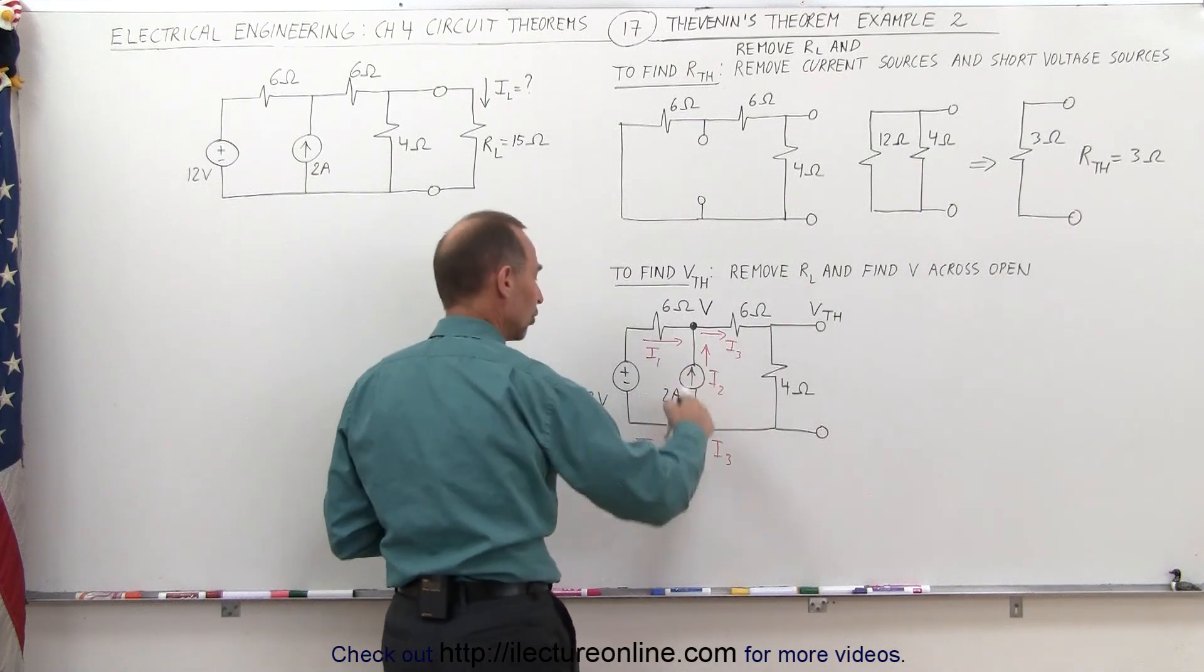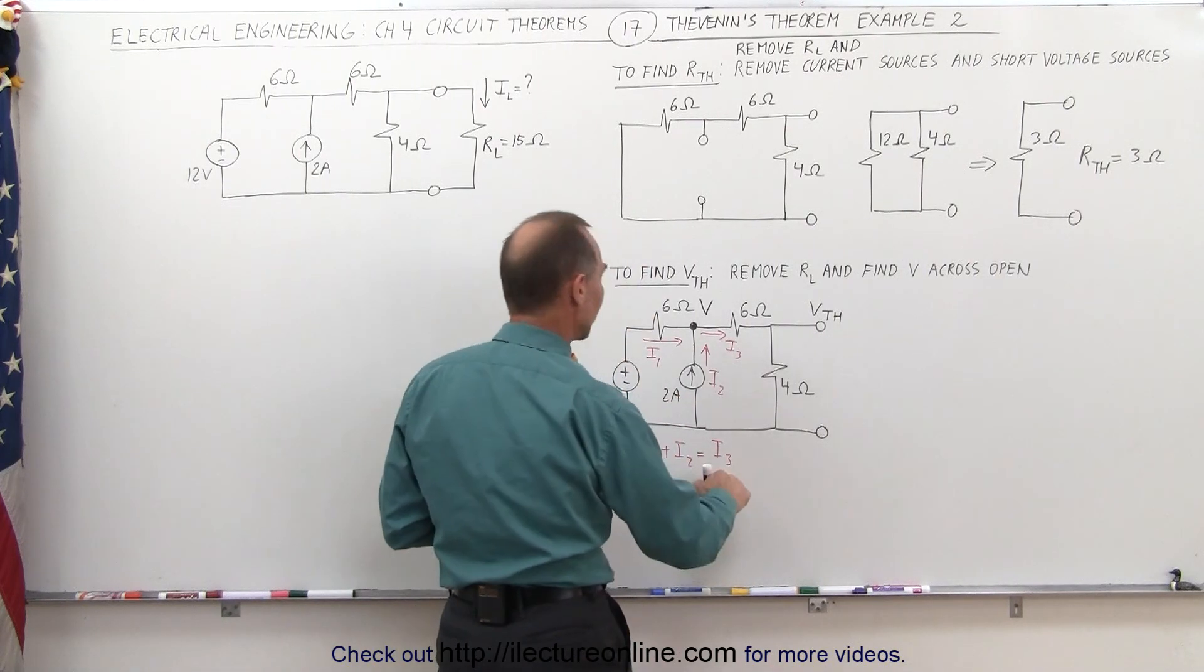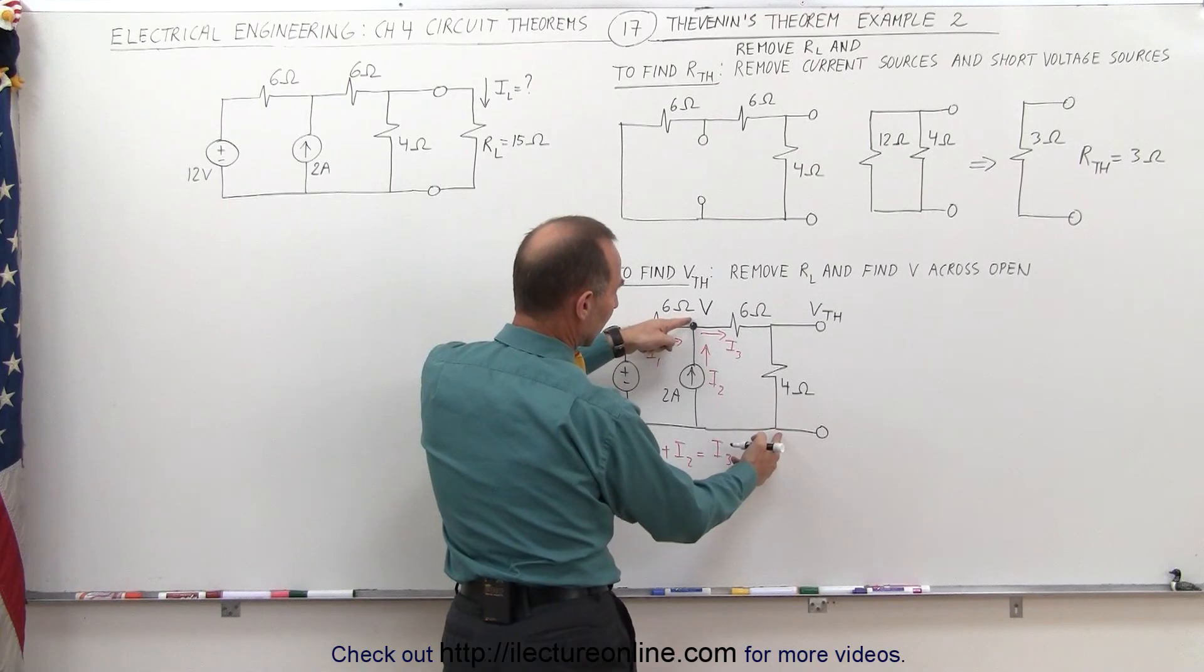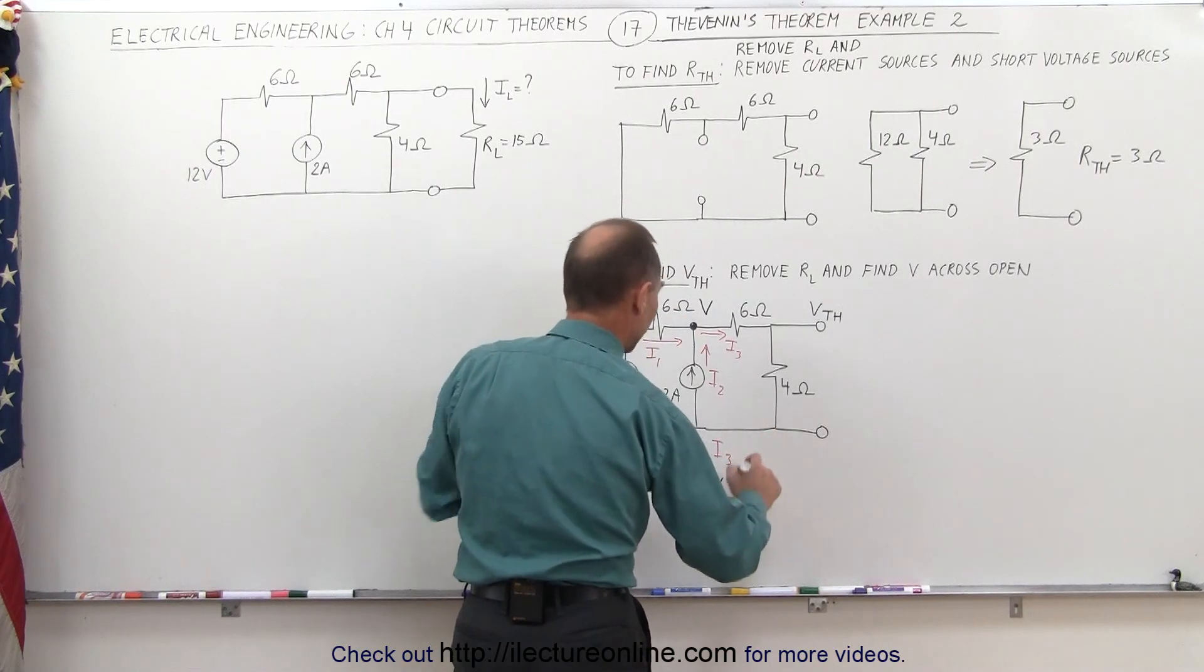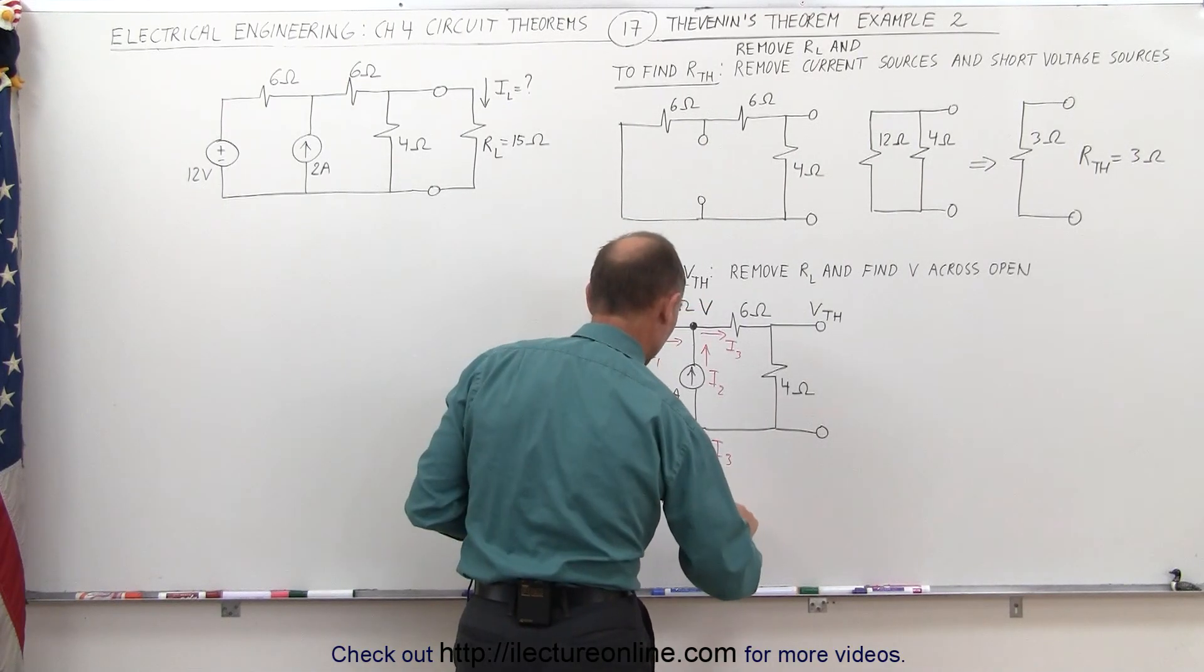plus I2, which is a 2-amp current, equals I3, which is the voltage difference between there and there, which is V, divided by the total resistance between those two, which is 10.